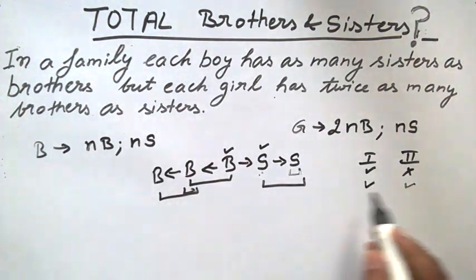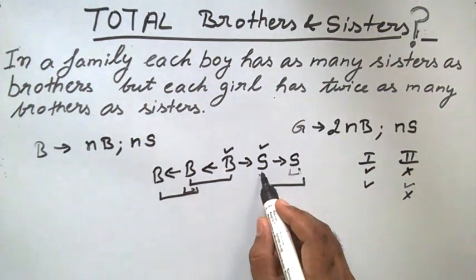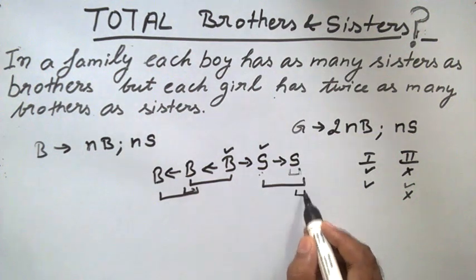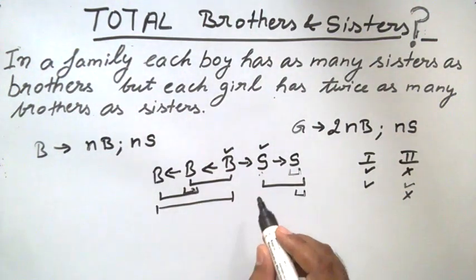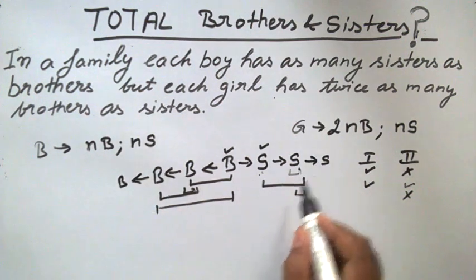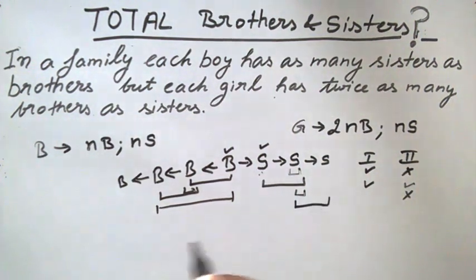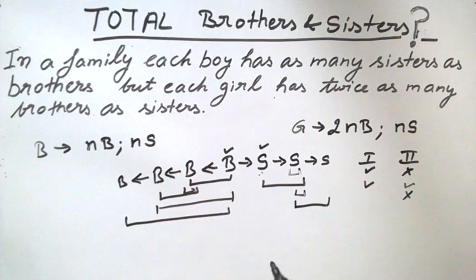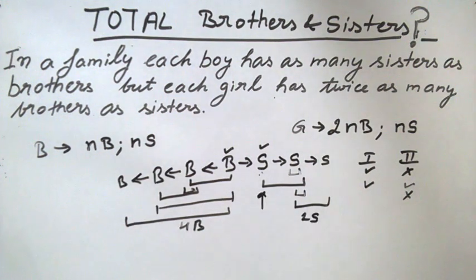But after this change, the second condition does not hold again. For this girl, there is one sister and three brothers. So we need one more brother and one more sister to satisfy the condition. Now for this girl, there are two sisters and four brothers — four brothers and two sisters — so the number of brothers is twice the number of sisters.